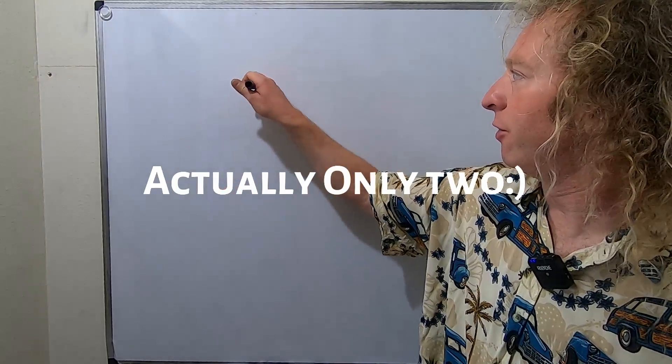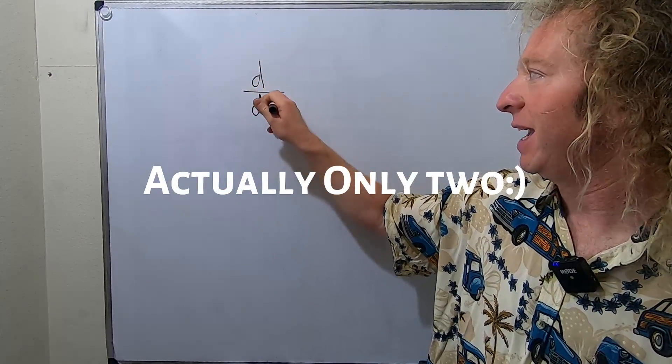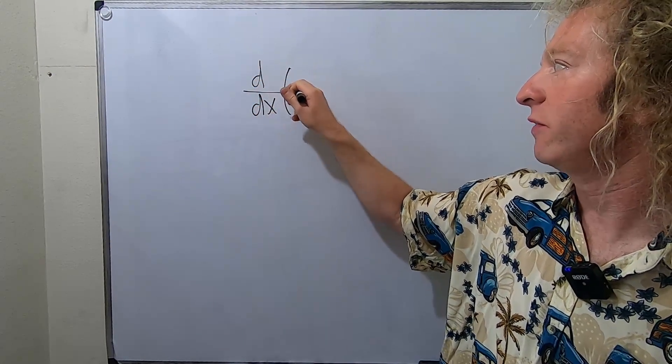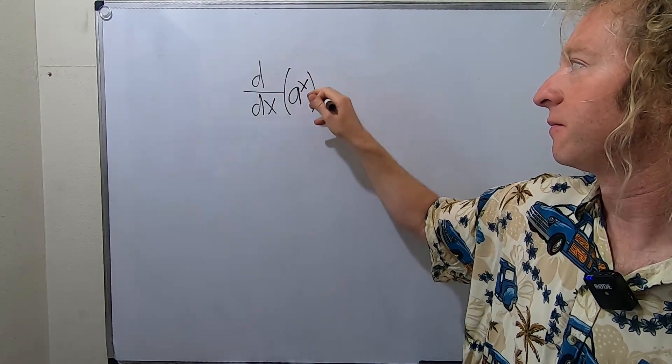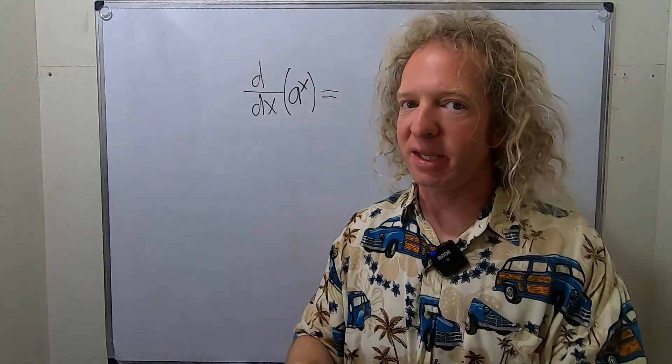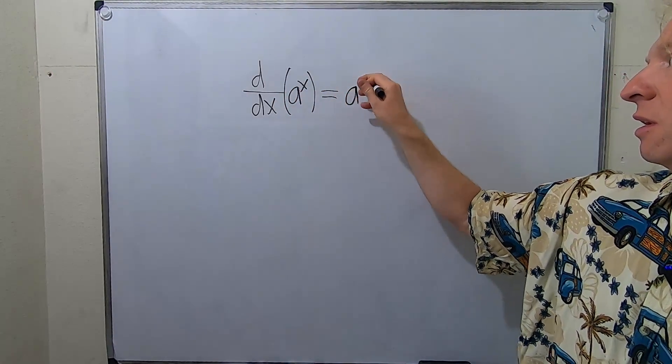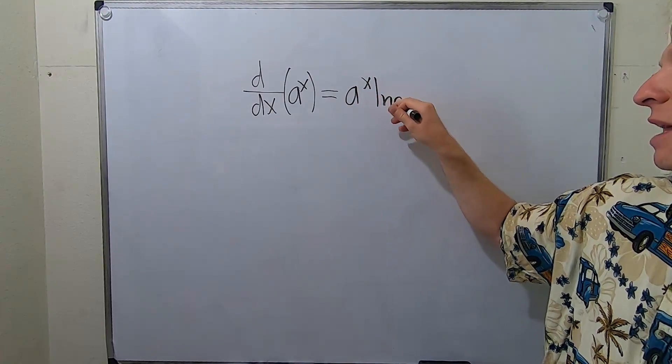So the first one is a formula for the derivative of a to the x. So if you take the derivative of a to the x, this is simply a to the x natural log of a. That's the formula.